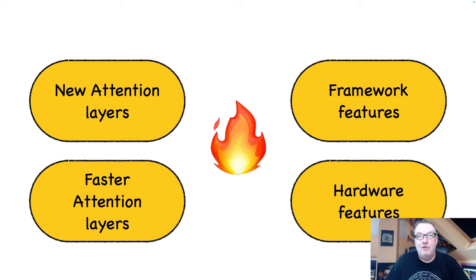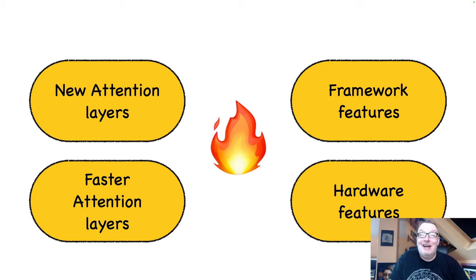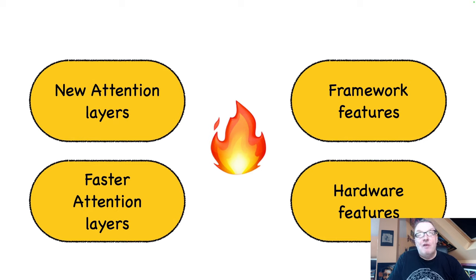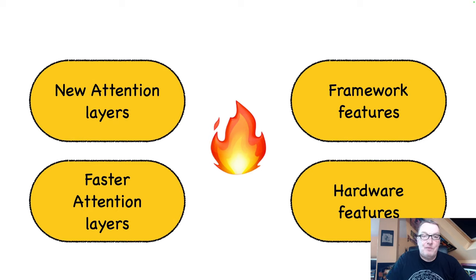Before we dive into the attention layers, I want to take a few steps back. There are really many ways to accelerate models. Today we'll look at what I call new attention layers and faster attention layers — technology improvements on the model side. But obviously there are other ways, like hardware acceleration and framework features such as model compilation, PyTorch 2.0, quantization, and so on. We won't go into that stuff today, but that's coming later. I just want to give you the big picture on the different techniques available to accelerate models.